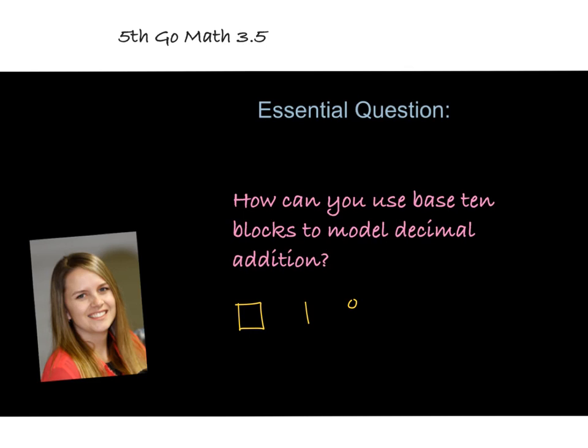These are the drawings that we're going to use for modeling the base 10 blocks. The square represents the ones place, and with decimals, this is where the decimal would come, between the ones place and the tenths with a th, represented by that line, and then the hundredths, which is represented by the little circle. So this is the ones, the tenths, and the hundredths.